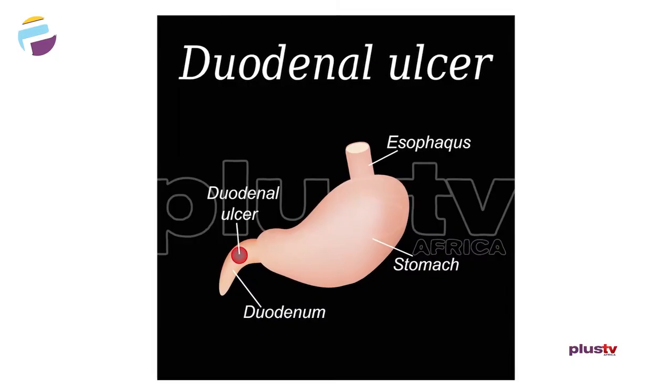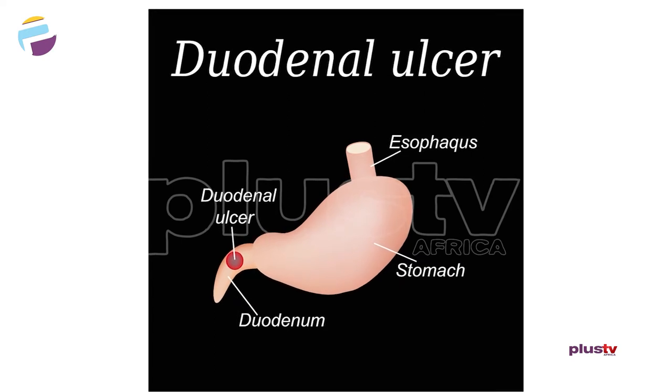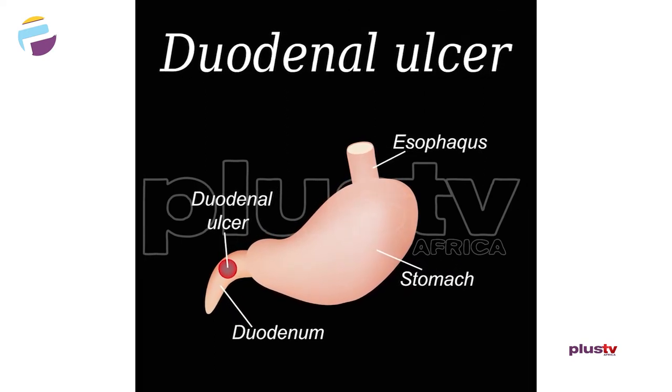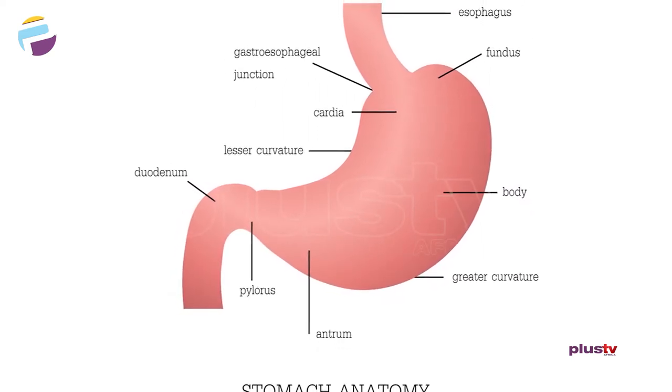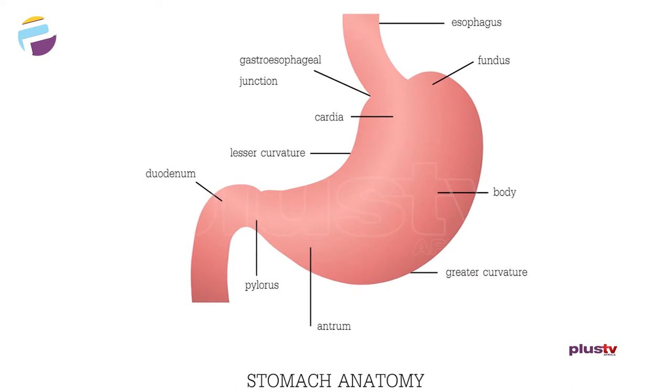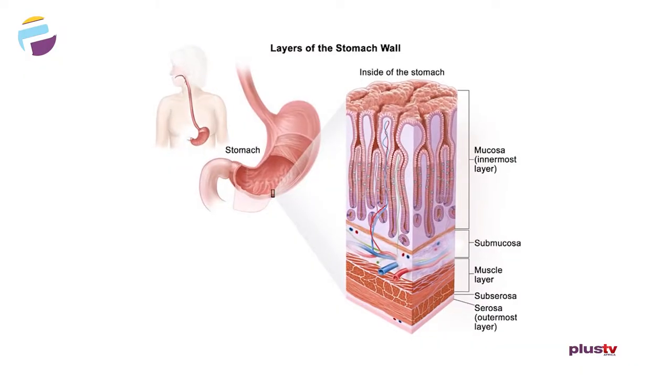The only other different type of ulcer is duodenal ulcer, which is just the next organ after the stomach. The stomach is the sac that contains food, and it also contains gastric acid or peptic acid that helps to break down protein. The word peptic is directly related to protein. Over time, there could be hypersecretion of this acid that could cause a breakdown in the walls of the stomach.